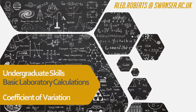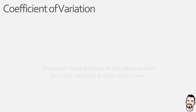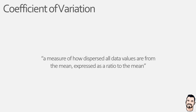So what exactly is the coefficient of variation? Well, in plain and simple terms it is commonly referred to as the relative standard deviation, because it takes the standard deviation as a measure of deviation in a data set and expresses it as a ratio to the mean value of that data set. Quite often it is expressed as a percentage of the mean value.